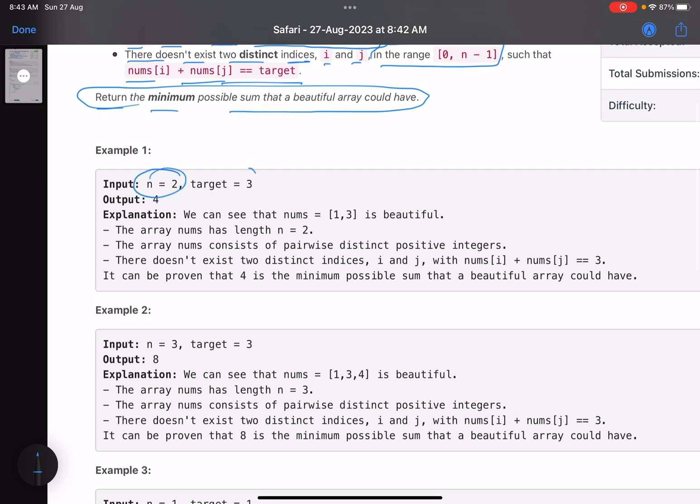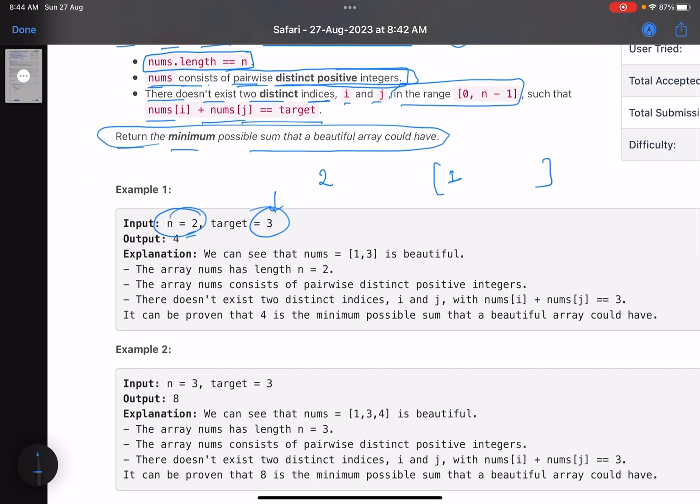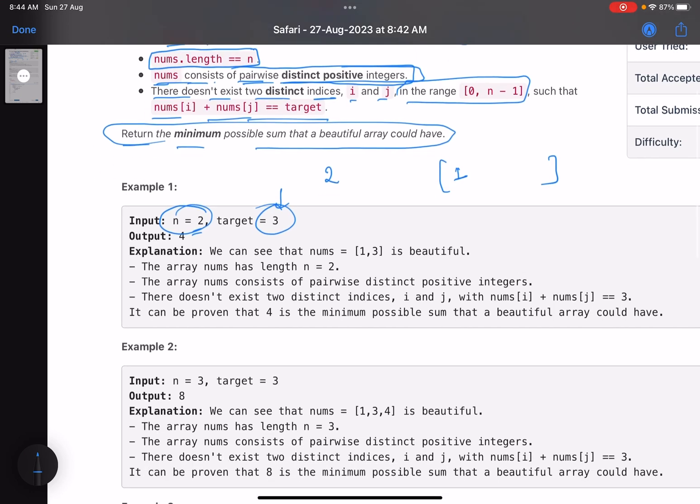Let's look into this example. Initially I do not have any element. The minimum value that I can have is one. So I check: can I put one in my array? Yes, because there is no other number in your array which sums up with one to give you a target of three. You can add one. Great. Now I have to add two numbers. I try two.